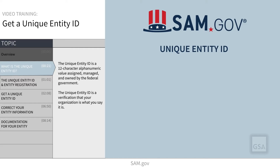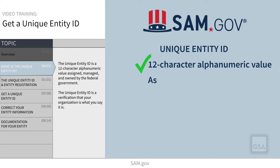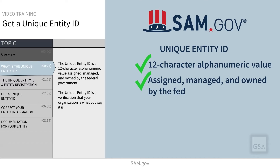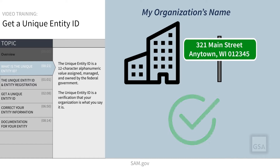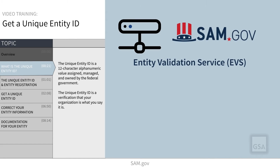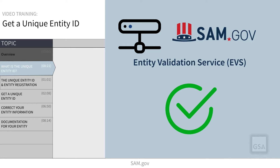The Unique Entity ID is a 12-character alphanumeric value assigned, managed, and owned by the federal government. SAM.gov is the system that assigns it. When you request a Unique Entity ID, your organization's legal business name and address will be validated. Validation is a verification that your organization is what you say it is. SAM.gov uses an Entity Validation Service, or EVS, to independently verify the existence and uniqueness of an entity.